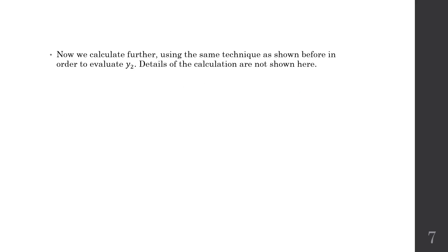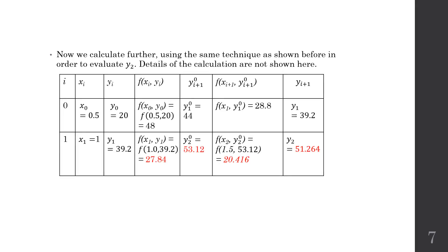Now we calculate further within the second row. We use the same technique as before. So we calculate the first gradient, the first derivative or the gradient at (x1, y1). So we got 27.84. Applying predictor's formula will give this answer, which is the y2* equal to 53.12.